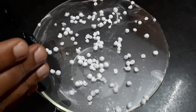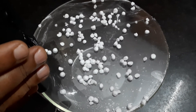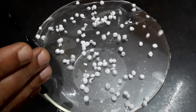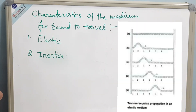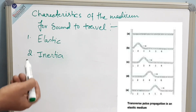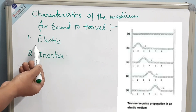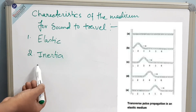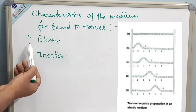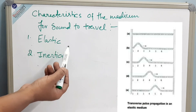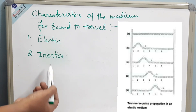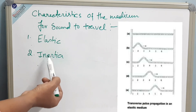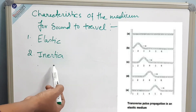You can consider these thermocole balls as air molecules. Now I will speak about the characteristics of the medium for sound to travel. A medium should have elasticity — the medium should be elastic — and the medium should have inertia. Elastic means the particles in that medium should have a tendency to return back after displacement. Inertia means the medium particle should have a tendency to store the energy.